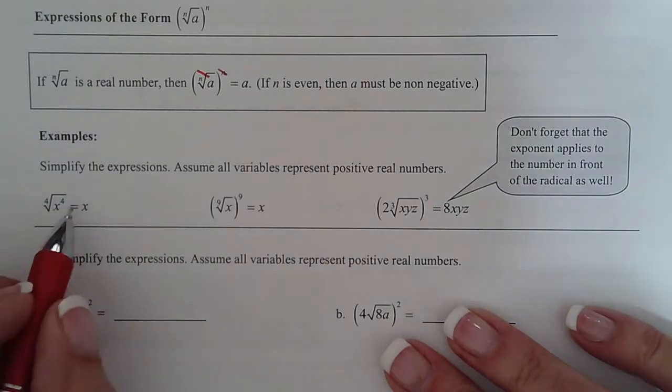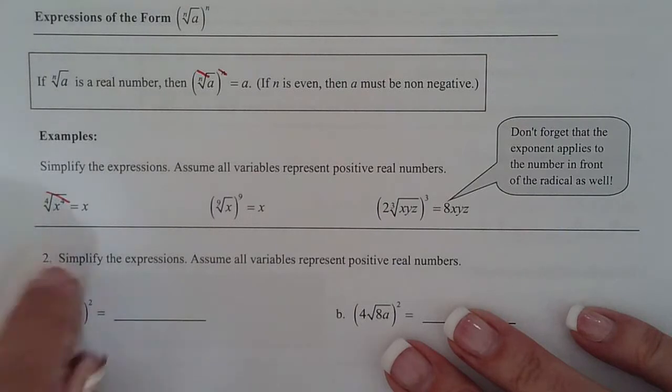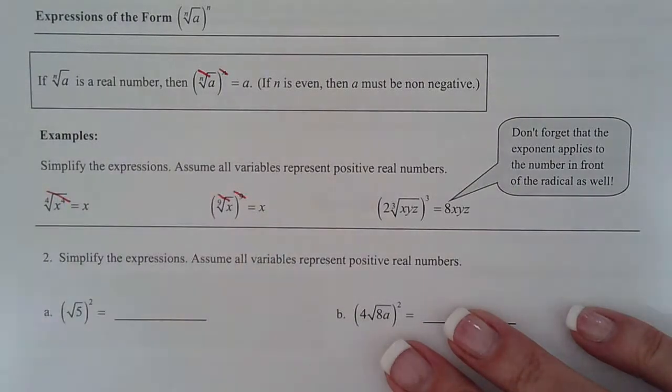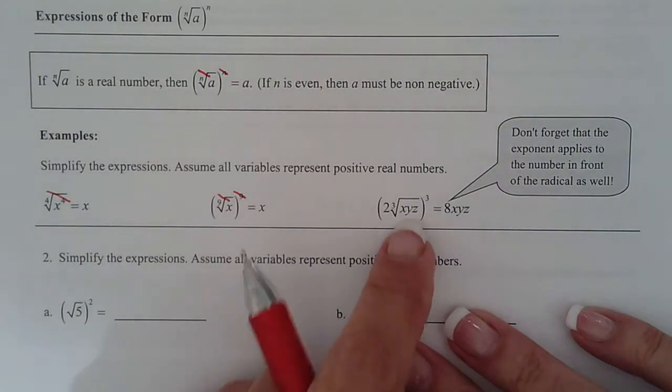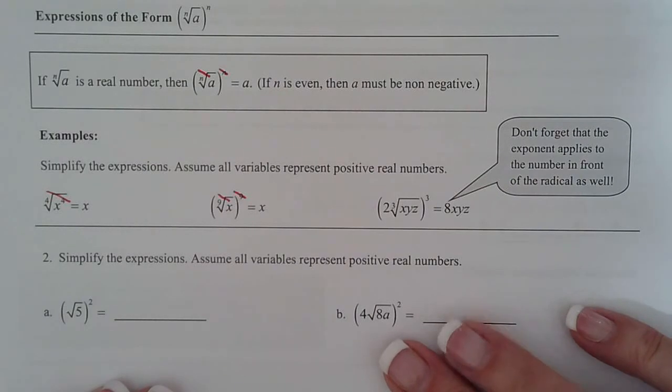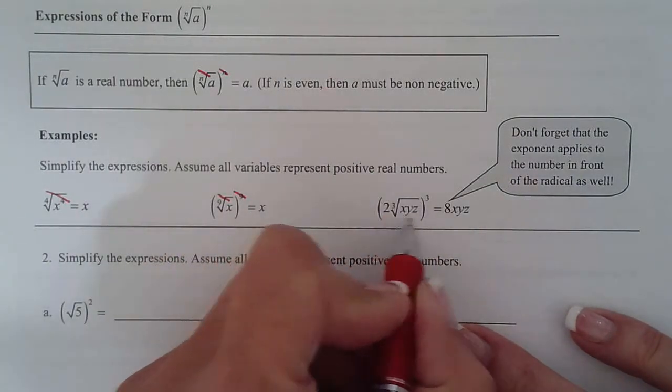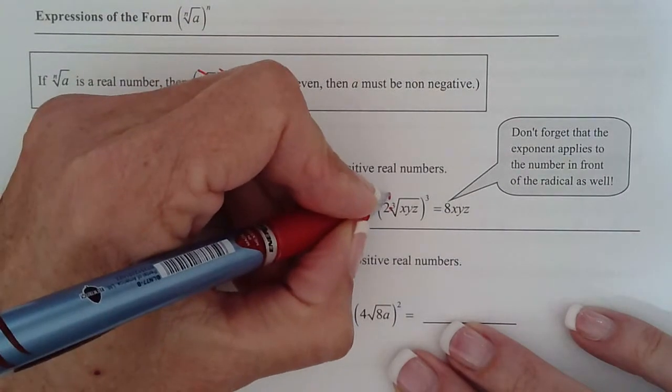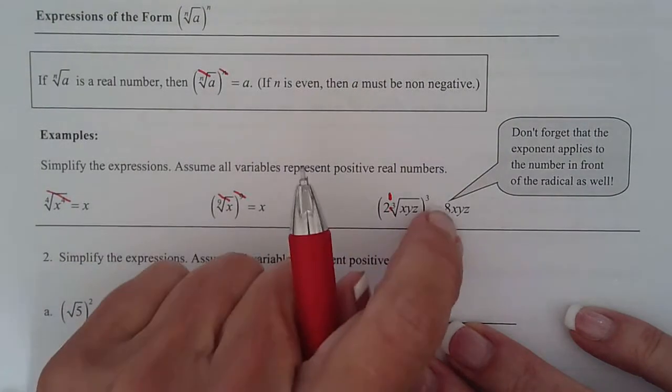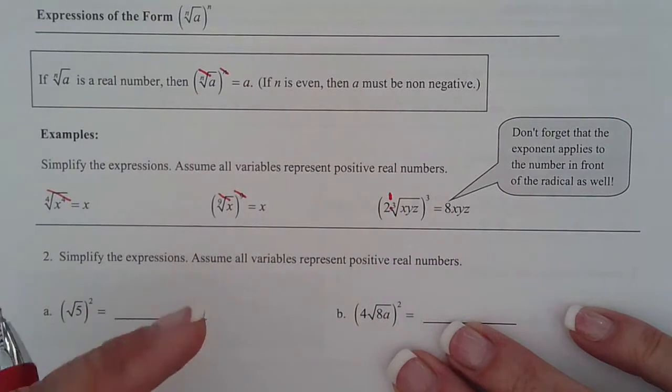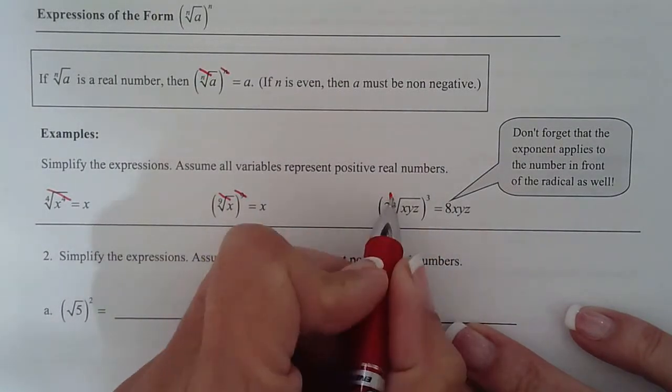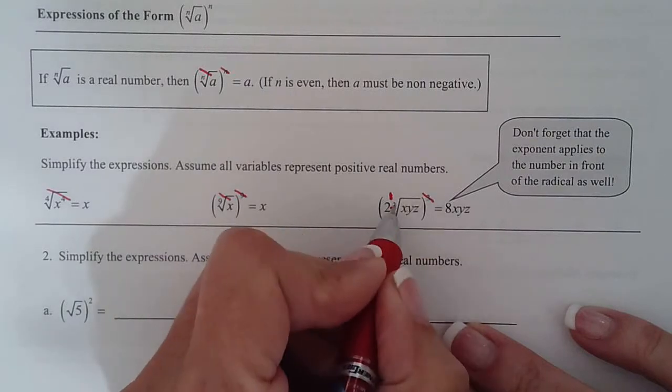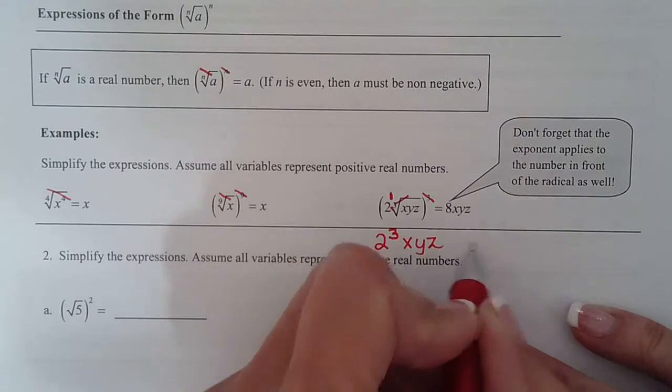The fourth root of x to the fourth - fourth power, fourth root undo each other, so the answer's just x. Ninth root of x to the ninth, same power, they undo each other, we just get x. This is the one usually that students have the hardest time with. They forget the rule from chapter four. Whenever you have a product inside, this is two times the cube root. That exponent has to be distributed to everything. So we have to take that cubed to the one, and then we have to take it to the radical.